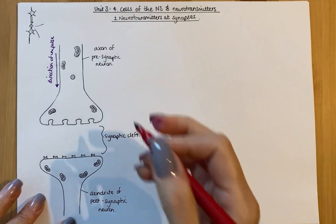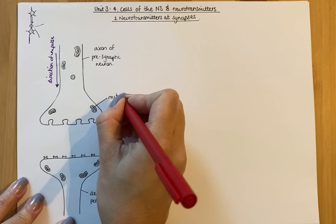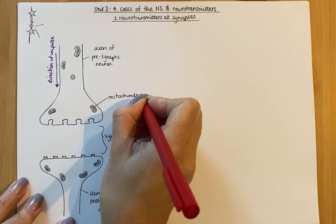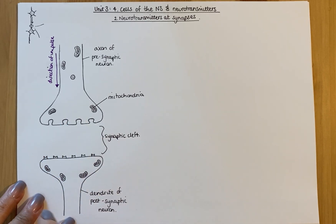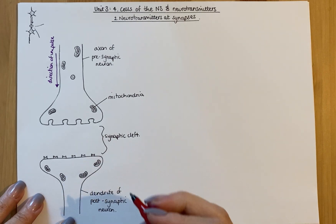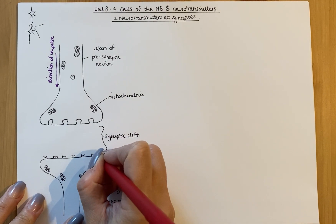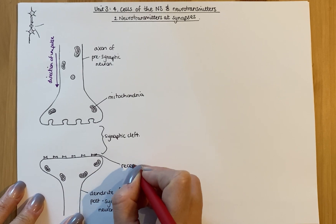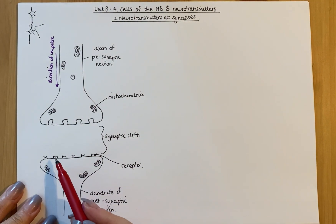There are another couple of things to label. I'd hope you'd recognise that as a mitochondria. In the previous video, I talked about mitochondria providing energy for the impulses passing down, but they're also there to provide energy for protein synthesis, which is a big part of this synaptic cleft section. The last thing to label is this thing here — that is a receptor. Notice how you only have receptors on the post-synaptic neuron, on the end membrane of that dendrite.